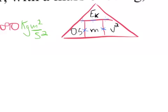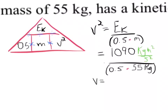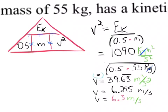You see the triangle — which I hate — but if you put your thumb or finger over the V squared, you'll notice that it's EK divided by 0.5 times the mass. The kilograms cancel out, so you've got meters squared per second squared. This is still V squared: 39.63 repeating meters squared per second squared. Take the square root of that, which gives us 6.295, and since there are only two significant digits from the original question, it's 6.3 meters per second.